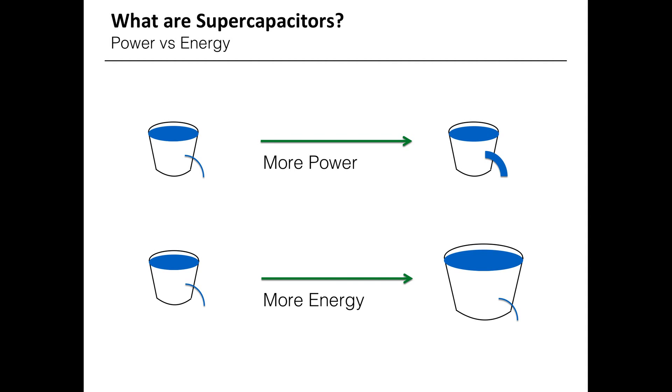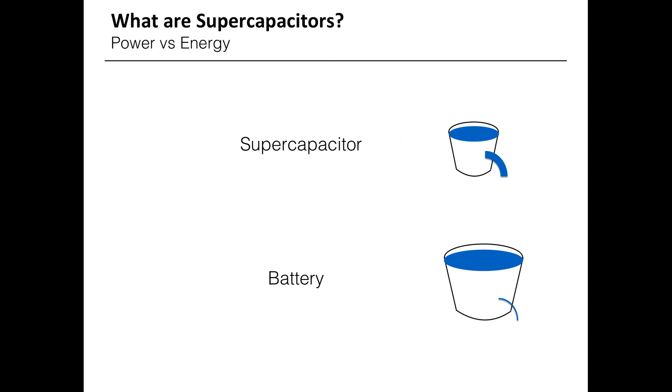A larger hole in the bucket increases the power, whilst increasing the volume of the bucket increases the energy that can be stored. Therefore, by this analogy, a supercapacitor is a small bucket with a big hole, whereas a battery is a big bucket with a small hole.